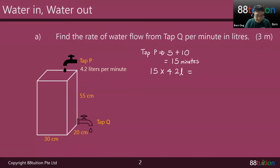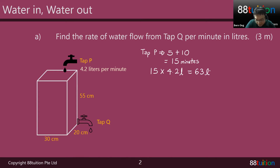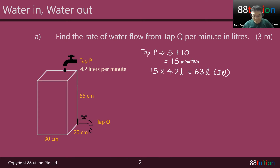15 times 4.2 is equal to 63 liters of water already in. So that is for tap P.